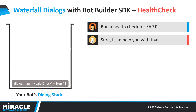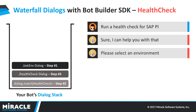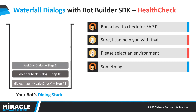Instead, the health check dialog would move on to step two. Within step two, it would identify that the environment variable is still not available, so it would call the askEnvironment dialog and move on to step three of the health check dialog within the stack, so that when we return we're back at the next step. Step one of askEnvironment would say, please select an environment. Once the user responds, the dialog would move back to step two of askEnvironment. Now, askEnvironment would check and since the environment entered is not one of the approved environments, it would again replace the askEnvironment dialog.